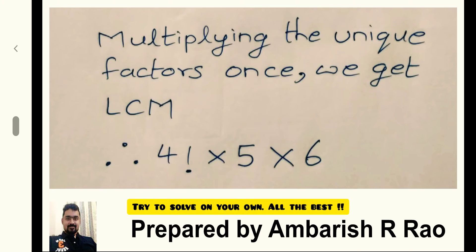Multiplying the unique factors, we get the LCM, i.e., 4 factorial into 5 and into 6. This gives us the LCM.